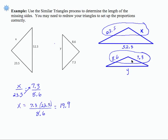For y, I can use this set of sides, so this one and this one. I can set up the proportion y divided by 8.6 equals 52.3 divided by 23.5. Again using partial cross product, I get y equals 52.3 times 8.6 divided by 23.5.